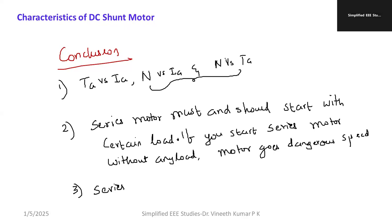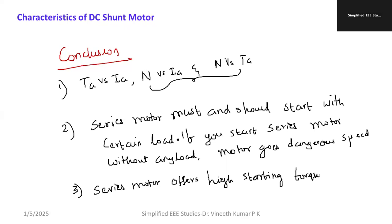Another important inference: a series motor usually offers high starting torque. So it is most appropriate for heavy load applications, especially cranes, hoists, and conveyors. These are the inferences we can make from the characteristics of the DC series motor.